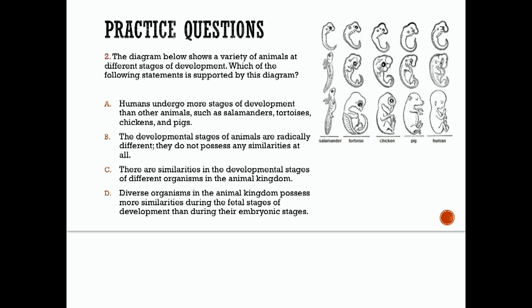Number two, the diagram here shows a variety of animals at different stages of development. Here's the five different animals in their stages of development. Start up top and then go down for each animal. So which of the following statements is supported by this diagram? Diverse organisms in the animal kingdom possess similarities in their developmental stages. Look at that. Overall, these similarities are more pronounced during the earlier stages of development than in the later stages. So if we go through the answer choices and look at C, it's saying there are similarities in the developmental stages of different organisms in the animal kingdom.